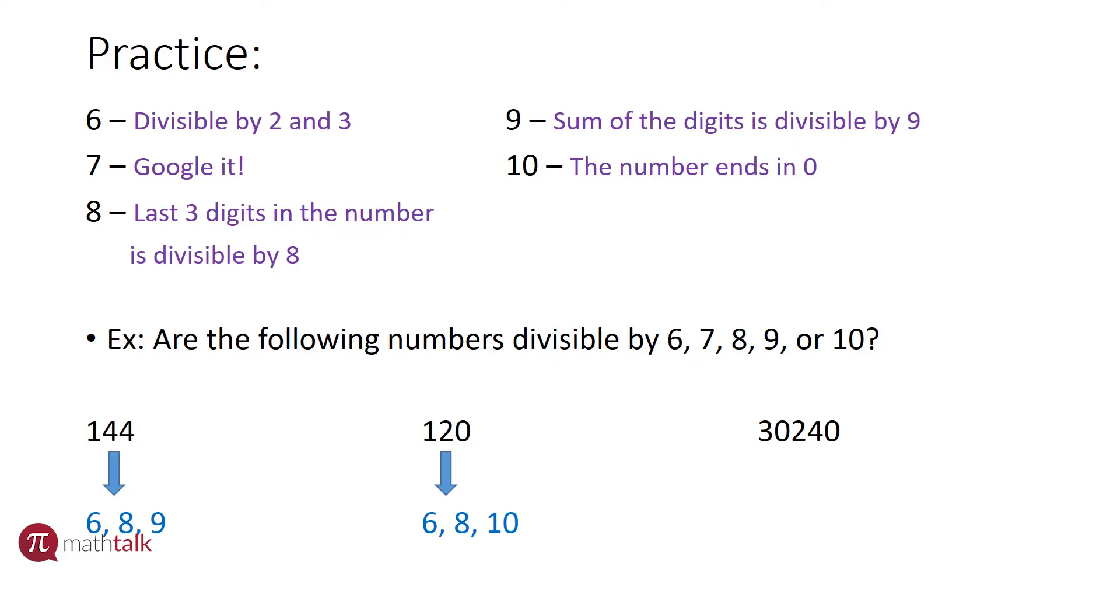Last one, a larger number to try. So looking at 30,240, let's see. The number ends in a zero, two, four, six, or eight, so two works. Three plus zero plus two plus four is nine, plus zero plus zero—that's why we don't add those, it doesn't change it—still nine. Nine is divisible by three, which means two and three both work, which also means that six works.